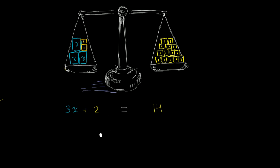Now think about how you would go about getting rid of these 1 kilogram blocks on the left hand side. Well, you could take those 1 kilogram blocks off the left hand side, but if it was balanced before, the left side would then be lighter and tilt up. We want to keep it balanced so we can keep saying the two sides are equal. So if we're going to remove two blocks from the left hand side, we need to remove two blocks from the right hand side as well.